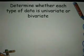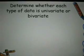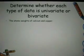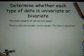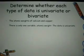Let's determine whether each type of data is univariate or bivariate. The atomic weights of calcium and copper. There is one variable — atomic weight — so the data is univariate.